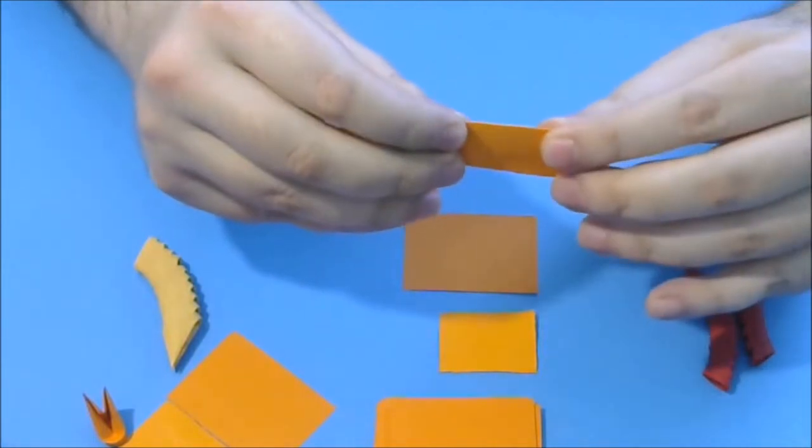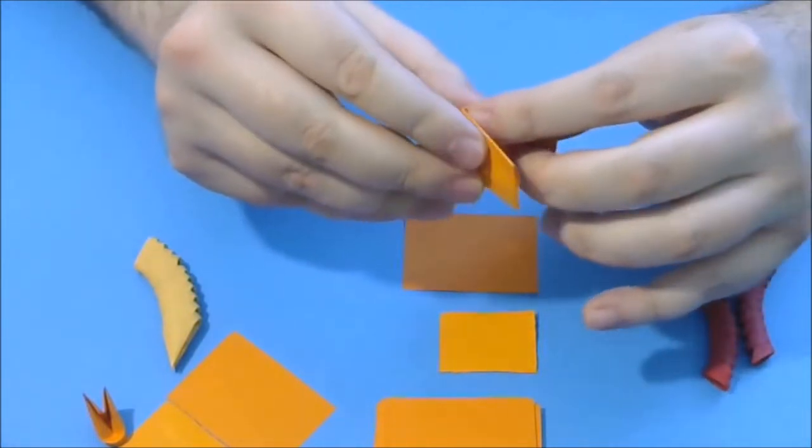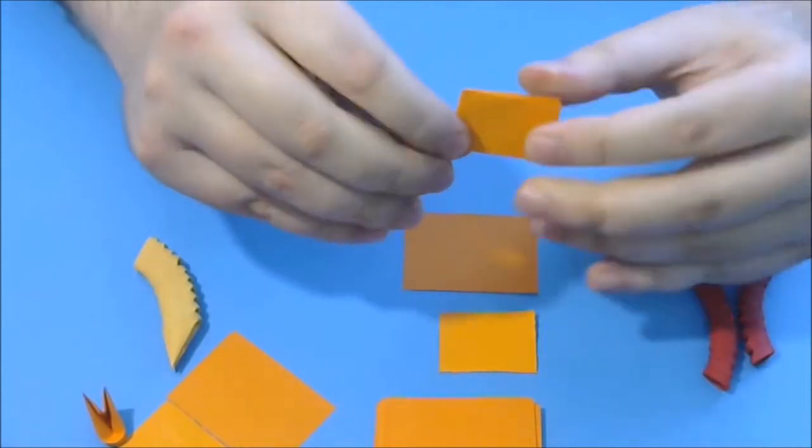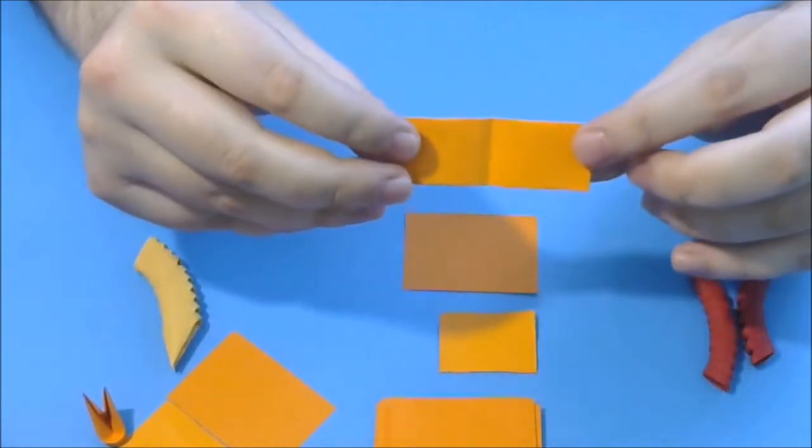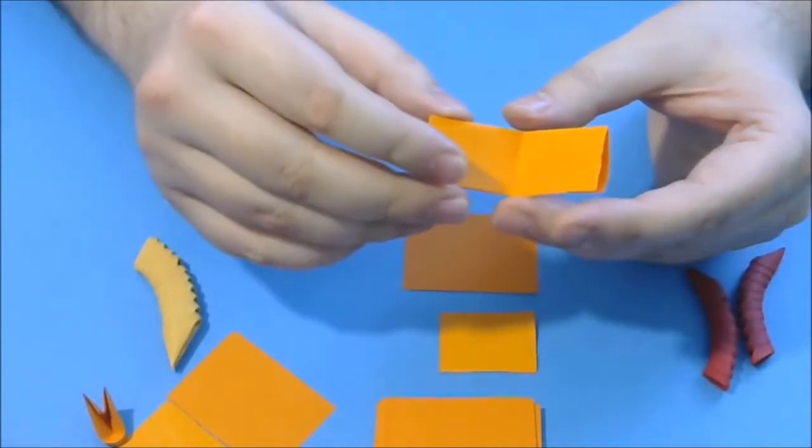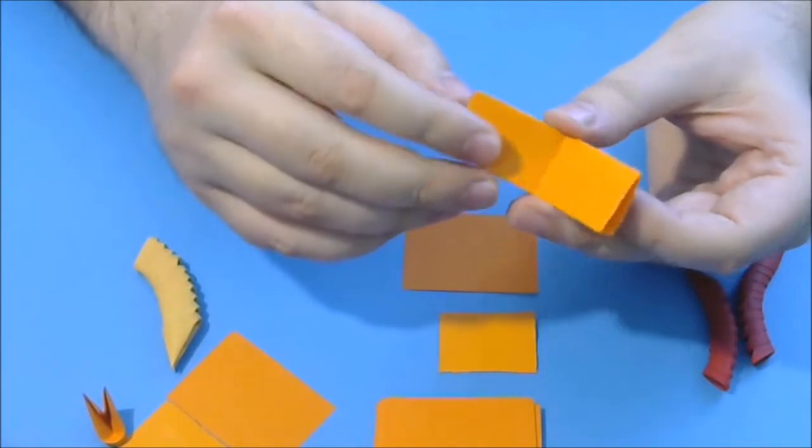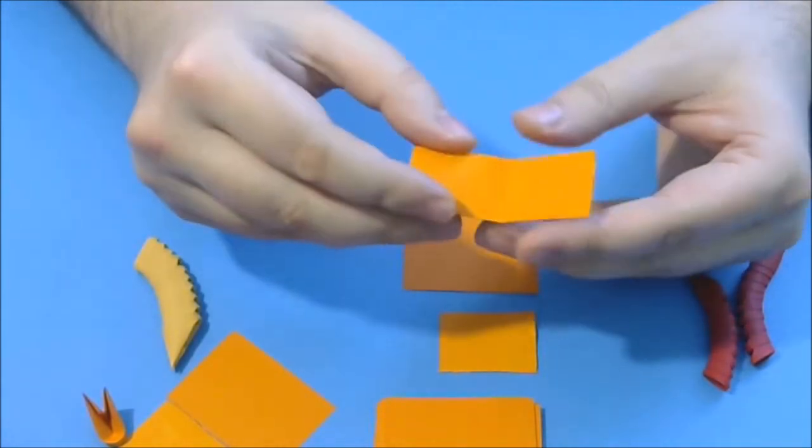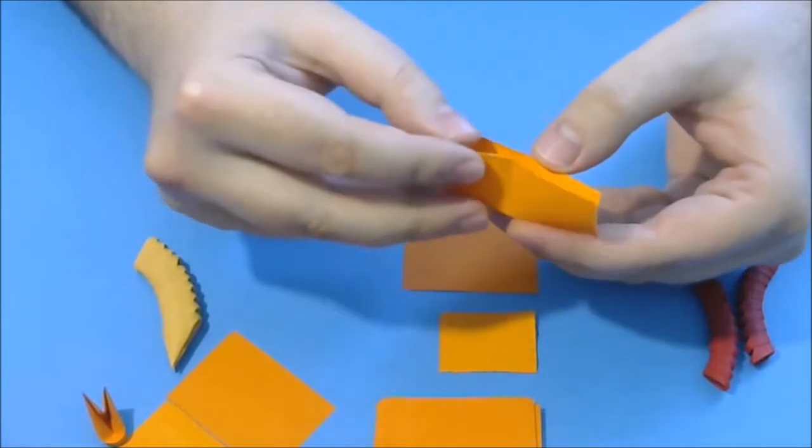The second step is to fold again in two like this and we will obtain a folding line here in the middle. Now we turn the paper to have this opening here towards us.